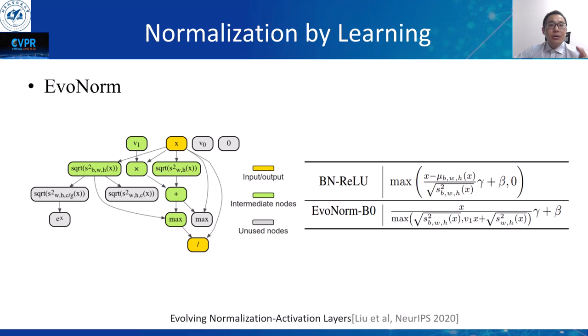Liu et al. searched for combinations of normalization and activation layers using automated machine learning, leading to the discovery of EvoNorm — a set of new normalization-activation layers with sometimes surprising structures that go beyond existing design patterns, merging normalization and the following non-linearity in a universal representation by searching possible operations.